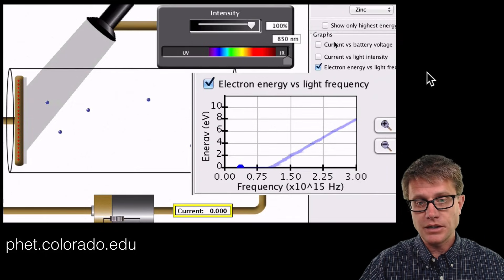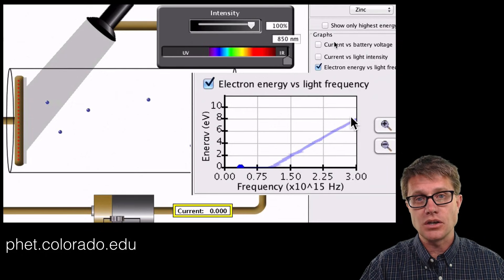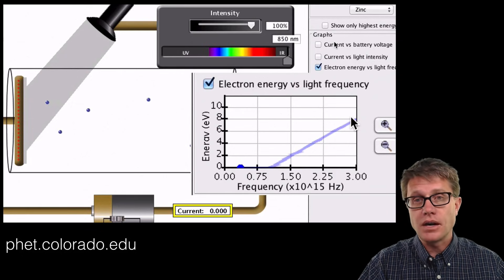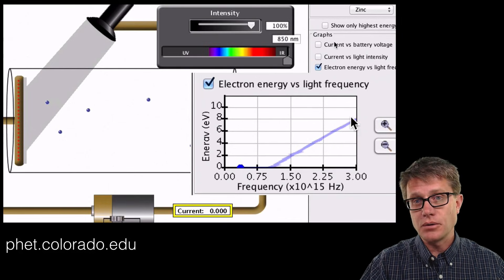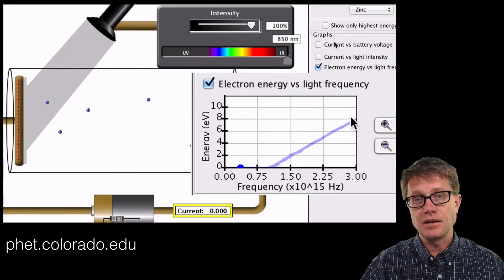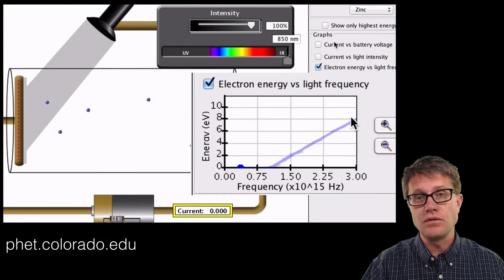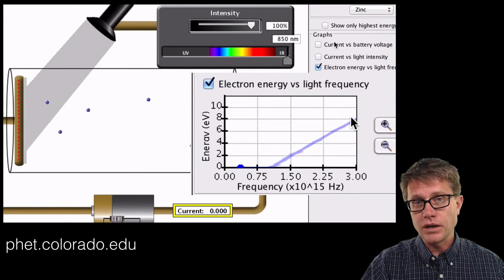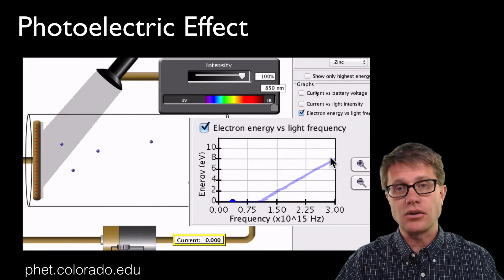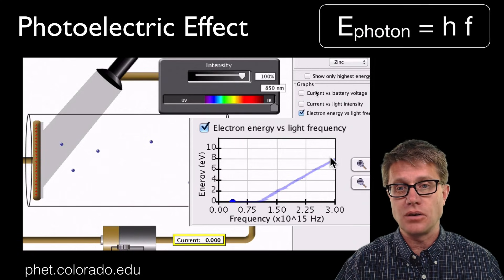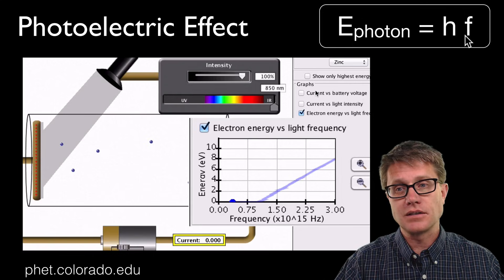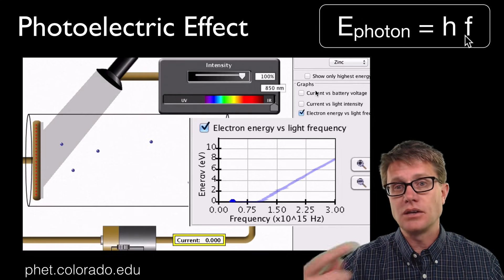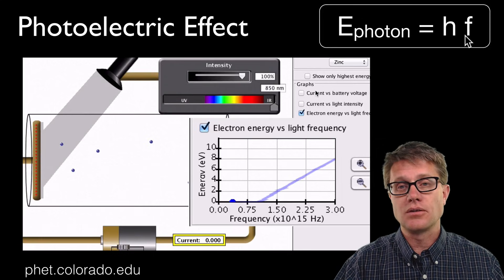What did that show Einstein? Well that showed him that there was a direct relationship. And so we could figure out how much energy is being released. And so all you do is simply take the frequency times Planck's constant and that tells you the energy of an individual photon. Because it is one photon that is kicking off one electron that is generating the amount of energy that we have. And so this is our formula. Energy of a photon is Planck's constant times the frequency. As we increase the frequency they are increasing the energy.